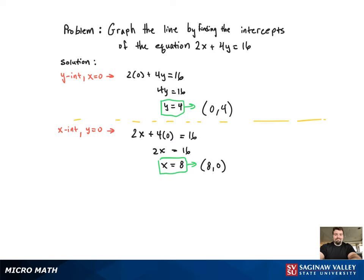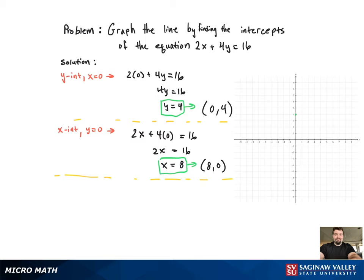Now that we have the two points, we're good to graph. We put in the two points, starting with 0 comma 4, then 8 comma 0, and we just connect the dots. There's the graph.